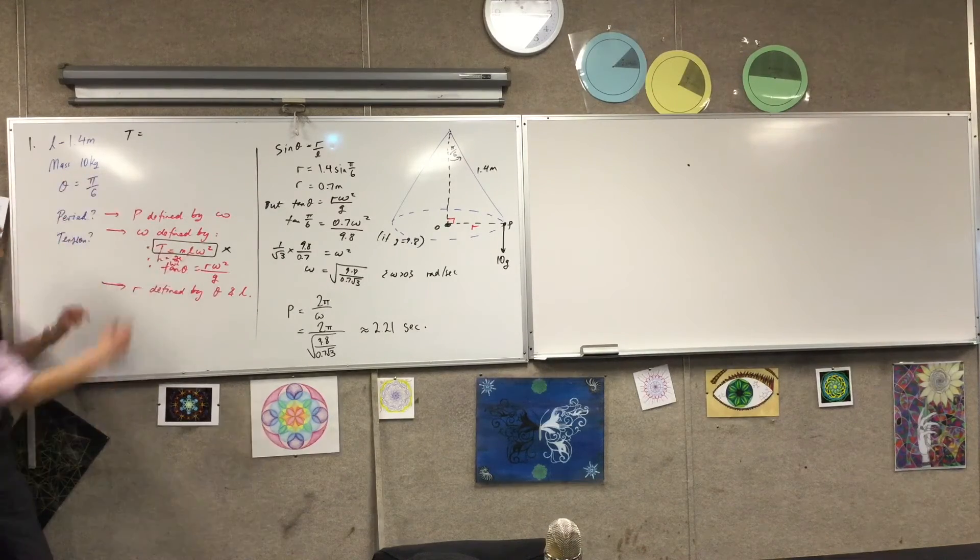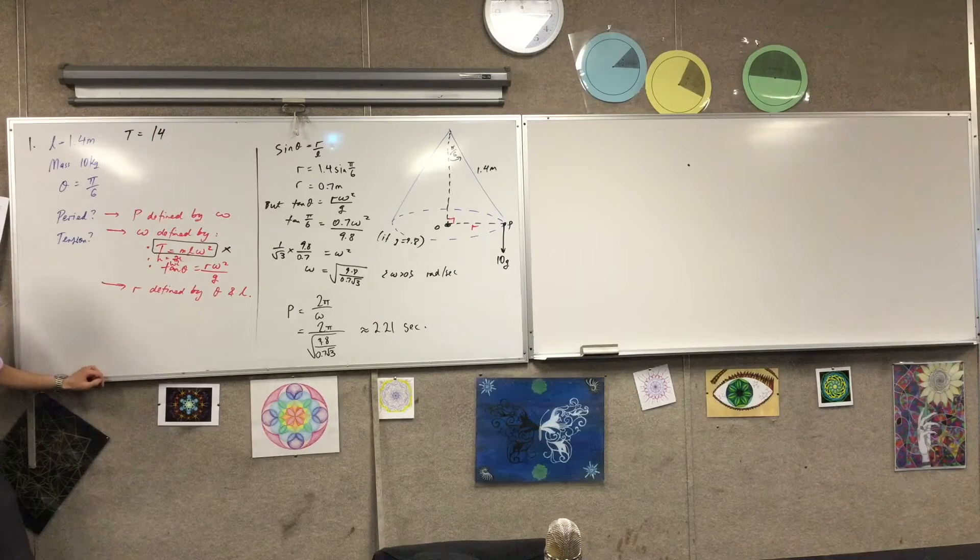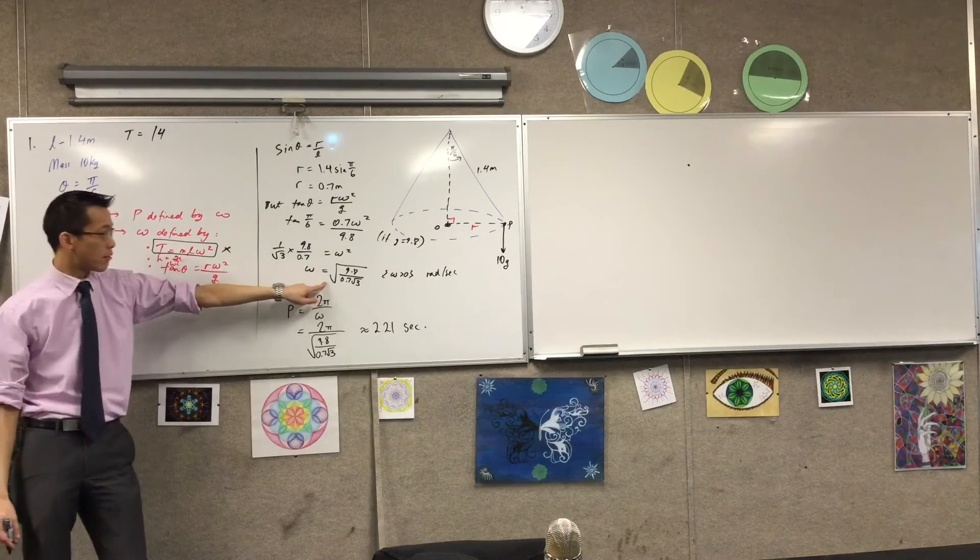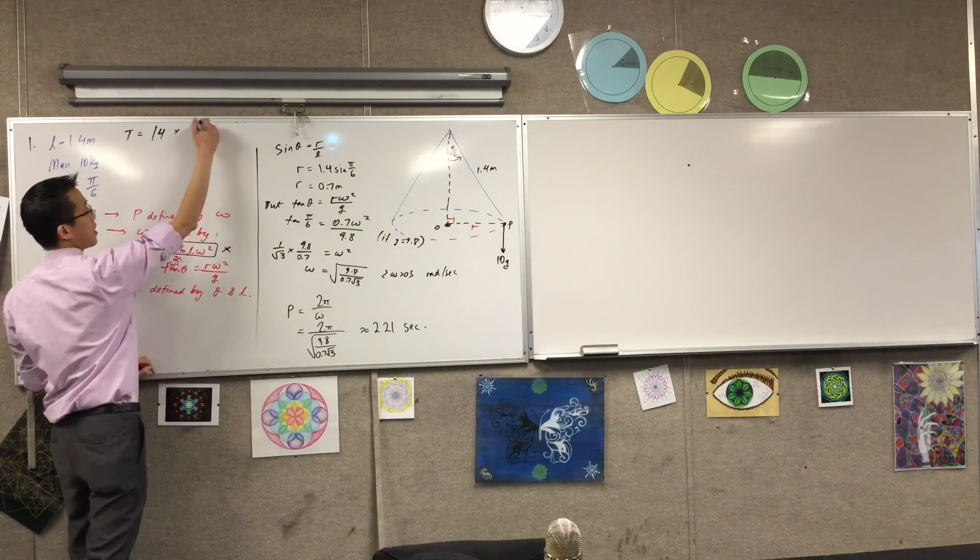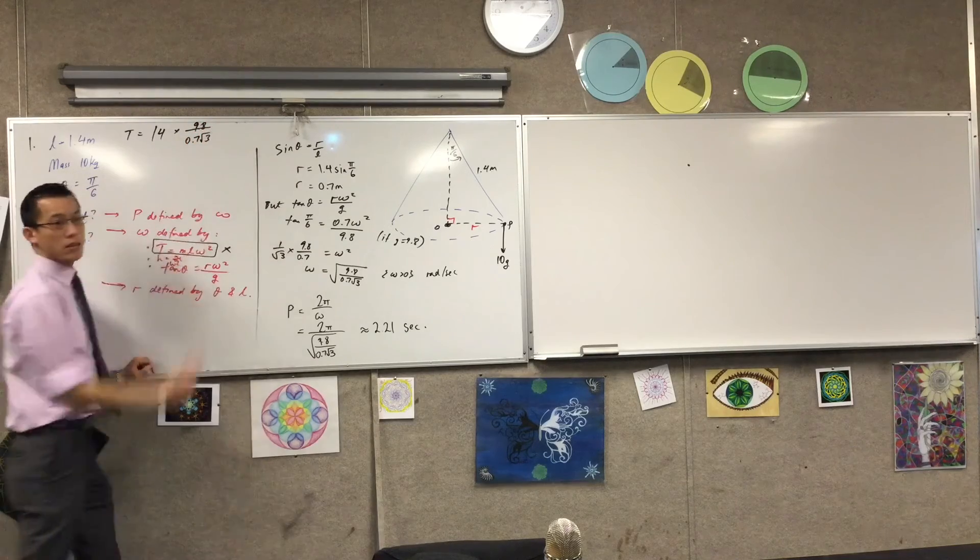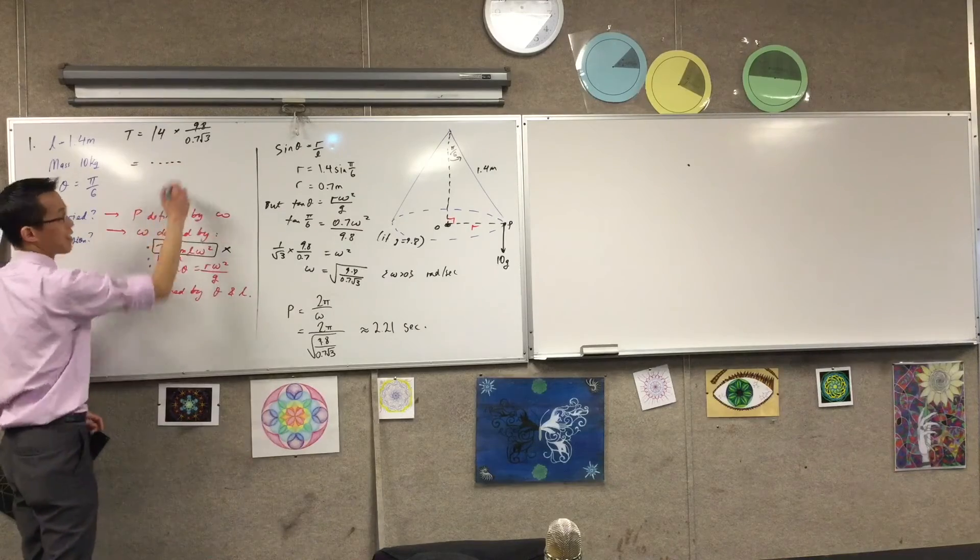Mass, length. So this is 14. Right? 10 times 1.4 times that. That, sorry. Squared. Right? So that's just going to be times 9.8 on 0.7 root 3. Yes? When you go ahead and you can crunch this through, right, you get this messy number. Okay?